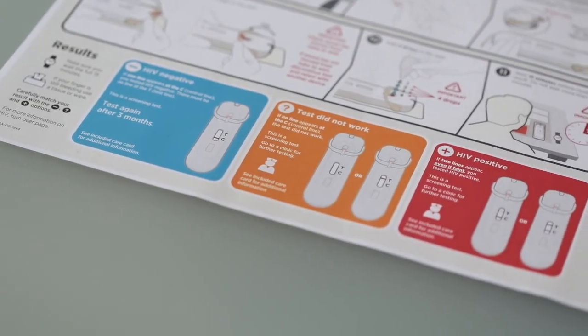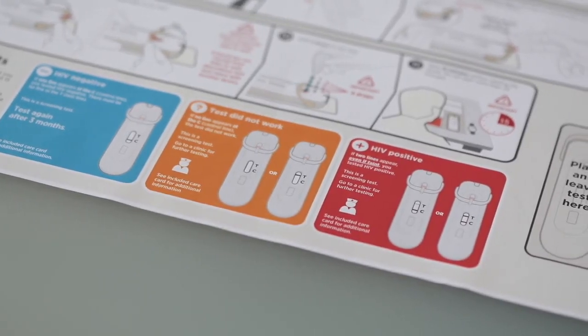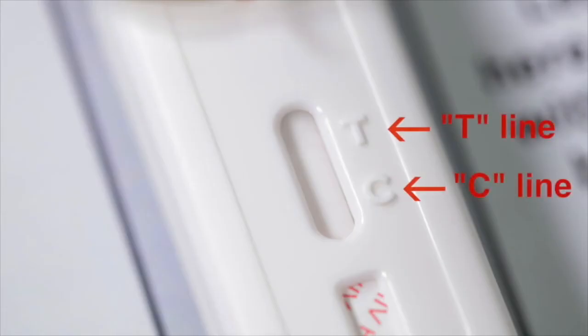Now match the lines in the results area of the test with the colored boxes on the instructions. It is the lines next to the C and the T which tell you your results.